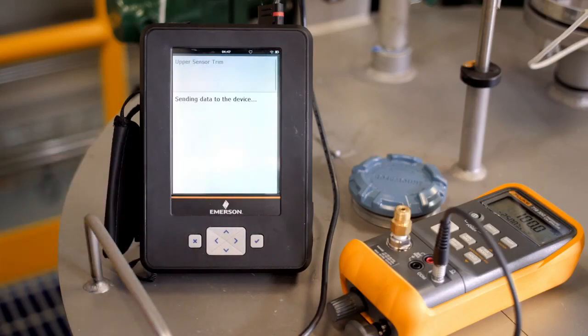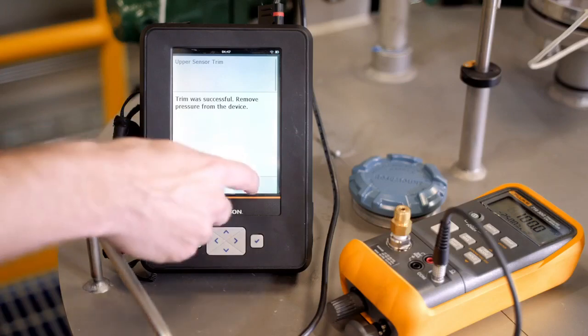Once these procedures have been completed, the differential pressure sensor has been calibrated, and the next step is to move on to the static pressure sensor.